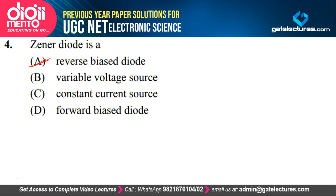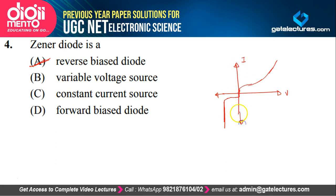Looking at the characteristics of a Zener diode: in forward bias it behaves like a normal P-N junction diode. In reverse bias, after the knee current, the voltage remains constant — this is the Zener voltage. Even if you keep increasing the current in reverse bias, this voltage remains constant. We operate the Zener diode in reverse bias only. Option B says constant voltage source, but it is not actually a source; however, it does maintain a constant voltage across it. Among the given options, option A — it is a reverse biased diode — is the correct one.